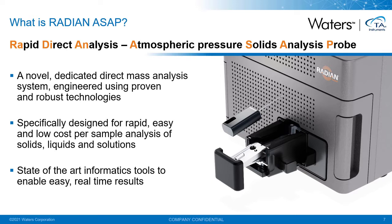For the Radian instrument, we've redesigned the ASAP source to incorporate a horizontal sample loader, which not only makes it simpler to use but also fits better with typical sampling and analysis workflows. The mass analyzer is based upon the compact format single quadrupole technology we premiered in the Waters QDA in 2013, proven out in thousands of customer laboratories ever since. Bringing these two technologies together, we've created a standalone, compact, robust, and easy-to-use instrument enabling rapid, low cost per sample analysis of solids, liquids, and solutions.